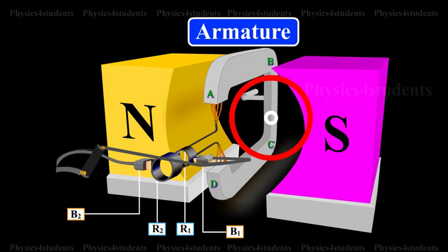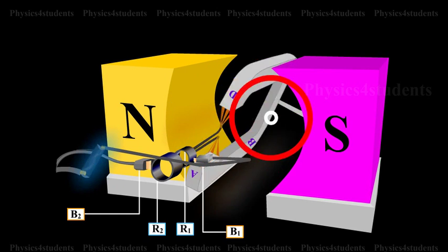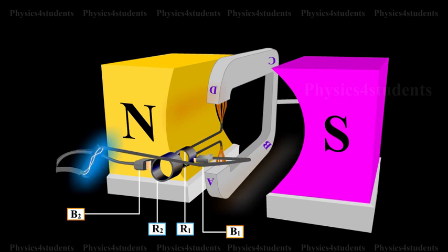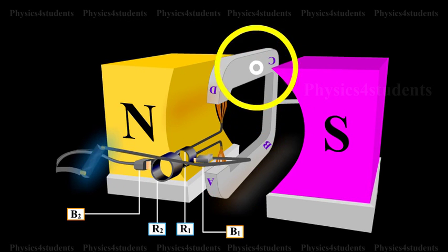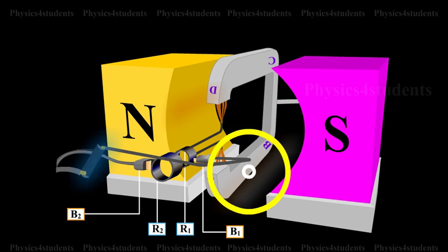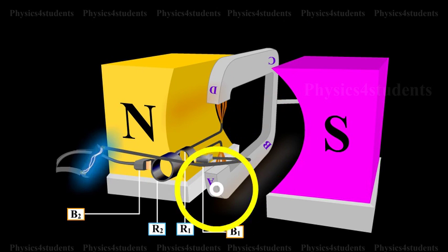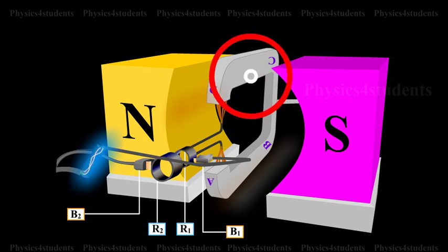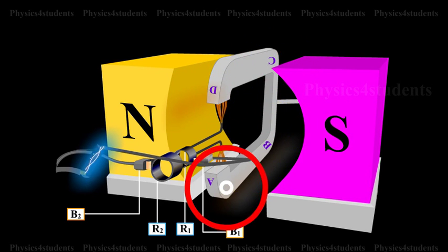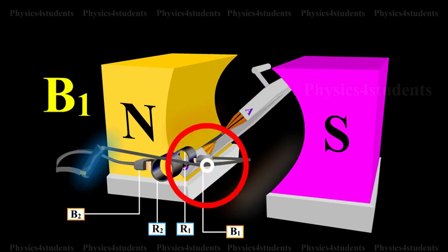Suppose the armature ABCD is initially in the vertical position, it is rotated in the anticlockwise direction. The side AB of the coil moves downwards and the side DC moves upwards. Then, according to Fleming's right-hand rule, the current induced in arm AB flows from B to A and in CD it flows from D to C. Thus, the current flows along D, C, B, A in the coil. In the external circuit, the current flows from B1 to B2.